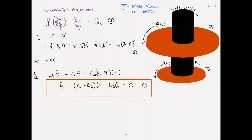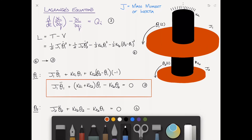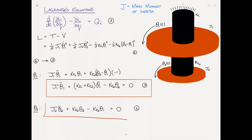Then with respect to theta 2 to get the second equation of motion, we get: J2 theta2-double-dot plus KT2 times theta 2 minus KT2 times theta 1 equals 0. That is your second equation of motion — equation 6 — with a red box around it.